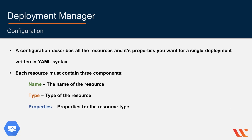The configuration describes the resources you want for a single deployment. It is a file written in YAML syntax that lists each of the resources you want to create and its respective resource properties. The configuration must contain a resources section followed by the list of resources to create.